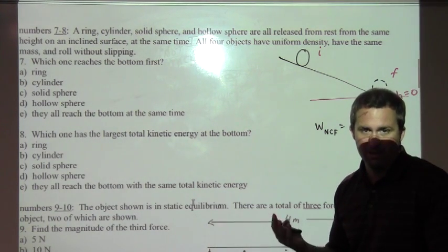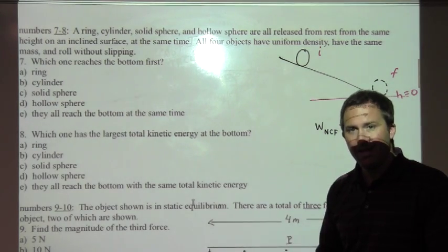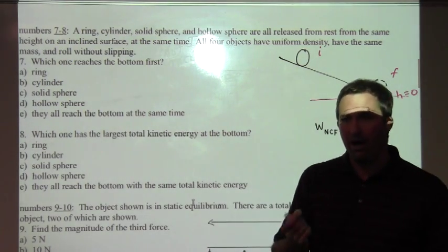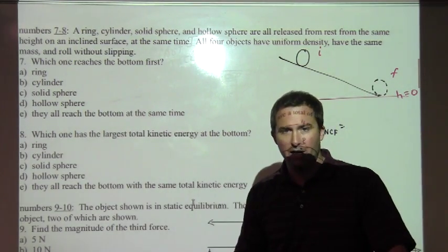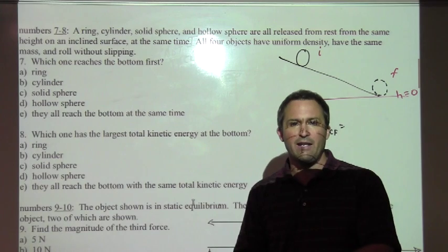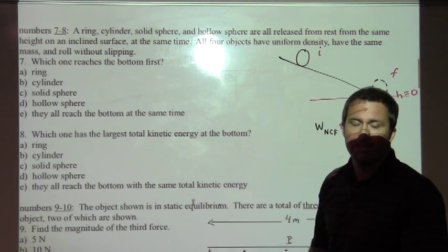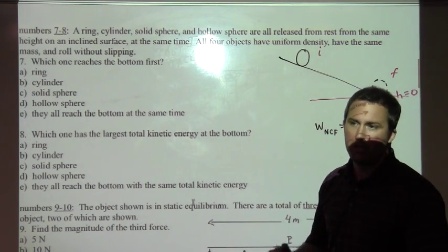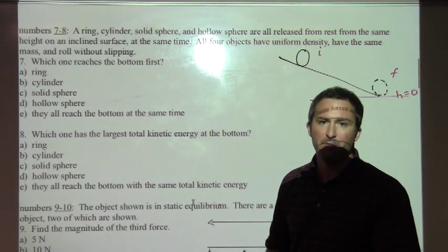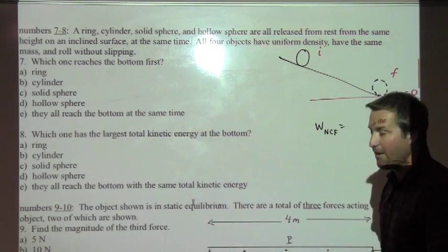Let's take a look at this for just a moment. The work done by all the non-conservative forces. What forces are acting on these objects as they're rolling down? We've got the force of gravity, we've got the normal force, and there's a key word here - roll without slipping. That means the point of the object that's in contact with the incline is actually instantaneously at rest.